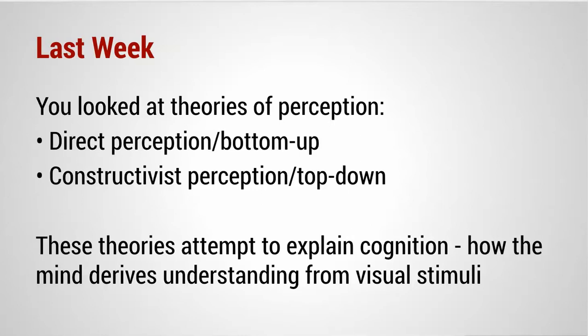These theories attempt to explain how the mind derives understanding from visual stimuli. We know that our eyes see the world and that the stimuli our eyes bring in are processed by the brain, and from that we gain understanding. What we don't know for sure is what the mechanism for this is — are we processing visual stimuli because the stimuli themselves have all the information we need, which would be direct perception? Or are we understanding the stimuli because we're able to sort out what we're seeing based on prior experience and knowledge? That would be constructivist perception. Evidence suggests that they both have something to do with how we perceive the world and how that cognitive act works.